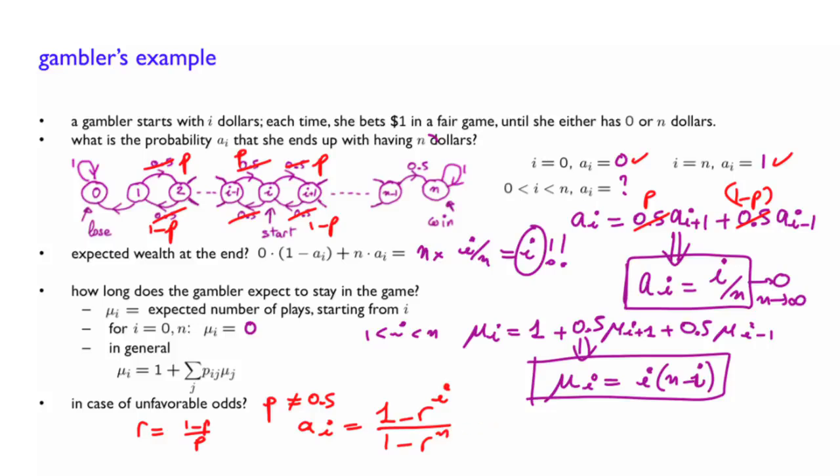And what would be the expected amount of time she will play? Instead of that equation, if you solve it, you would have μ_i equals (r plus 1) divided by (r minus 1) times i minus r^n times (1 minus r^i) divided by (1 minus r^n). Because you would have here again p and 1 minus p here.